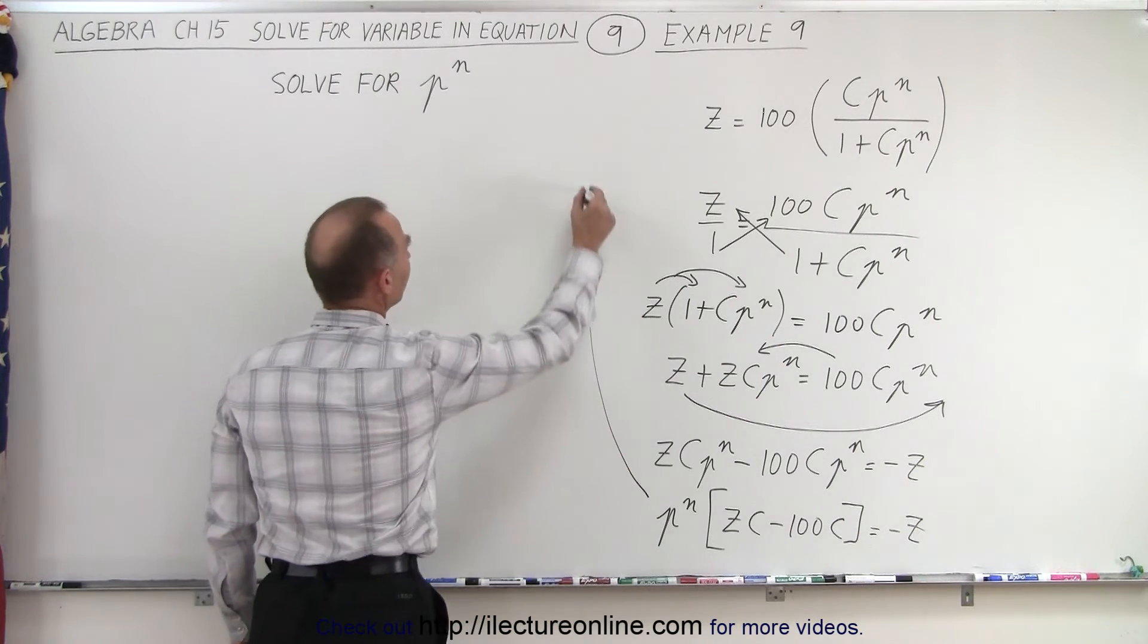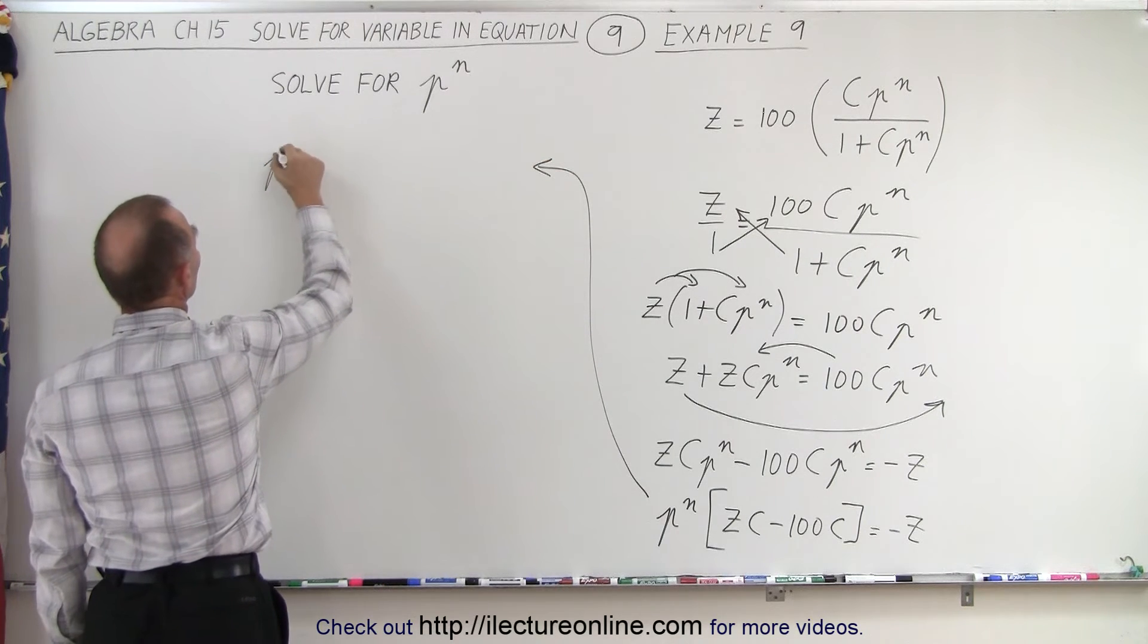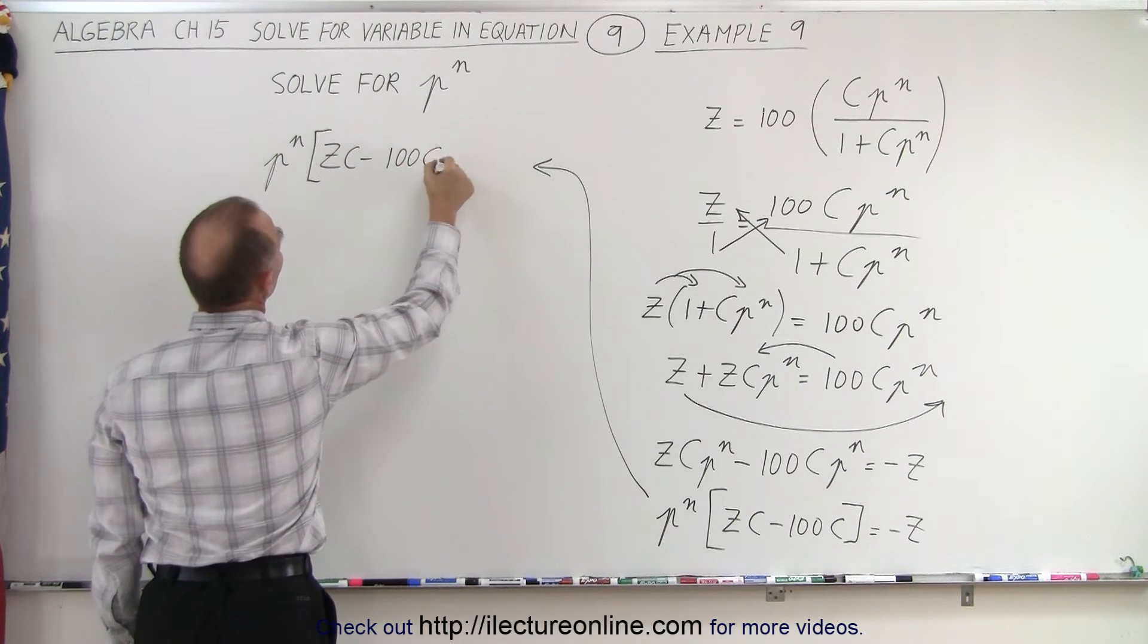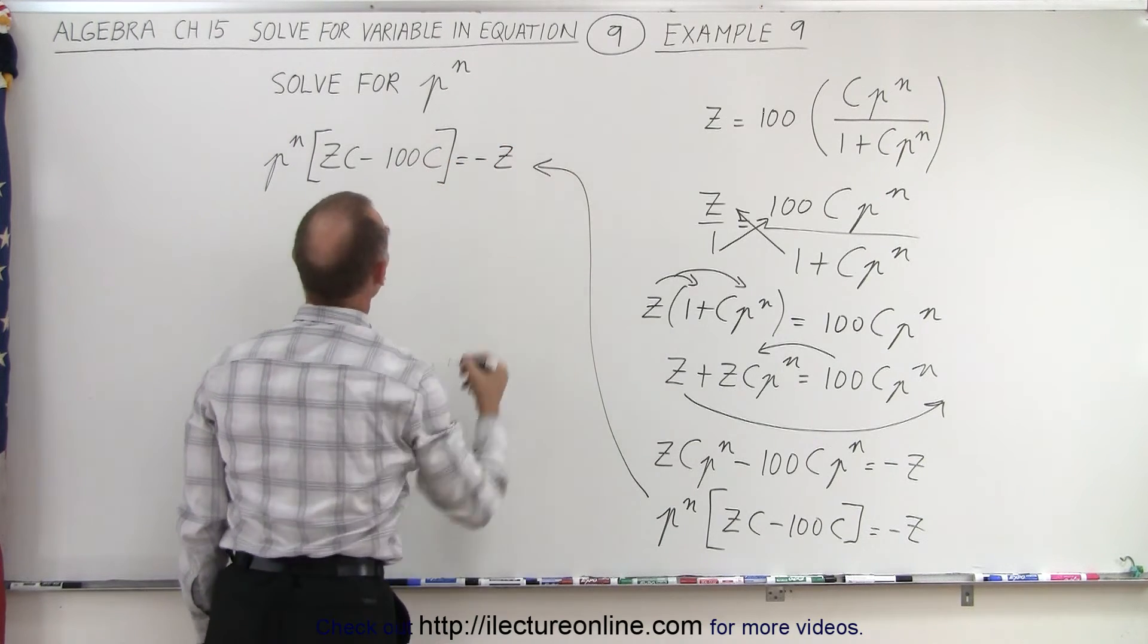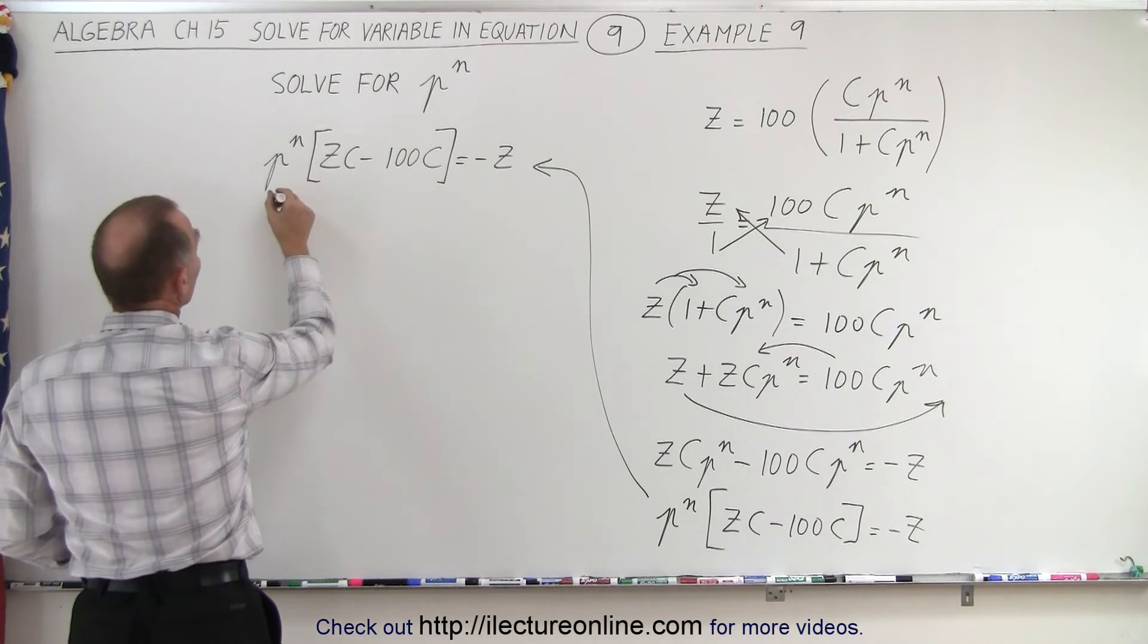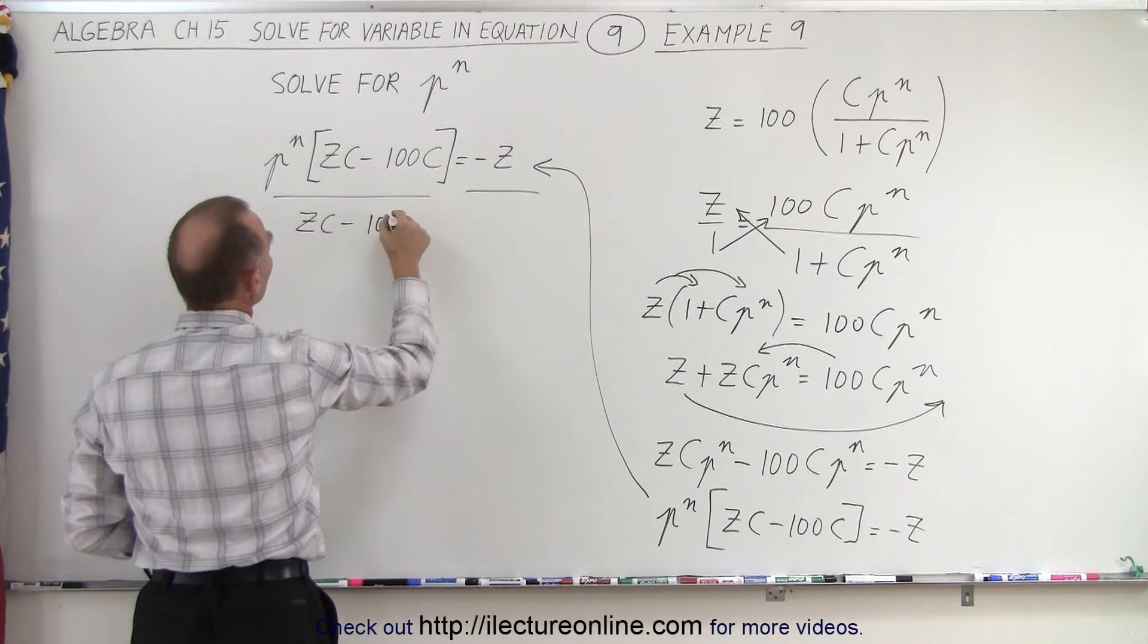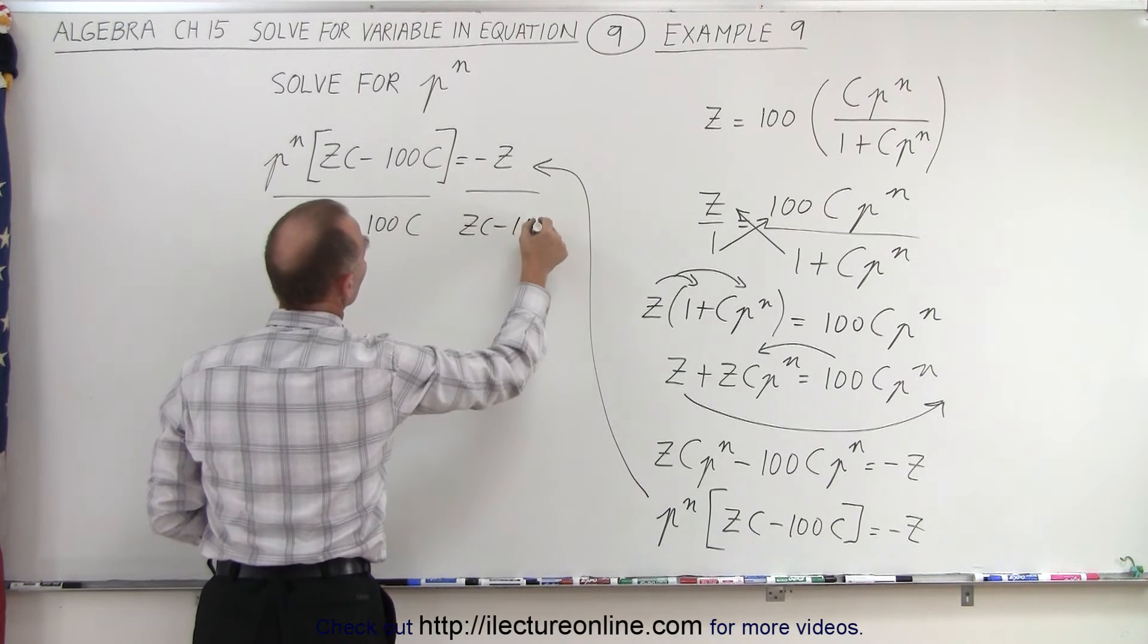Let's now move this over here to make it a little bit easier to work with. So let's rewrite the equation p to the n times zc minus 100c, and that is equal to negative z. And now all we have to do, just like a regular linear equation, we're going to divide both sides by the coefficient of what we're looking for, p to the n. So zc minus 100c and zc minus 100c.